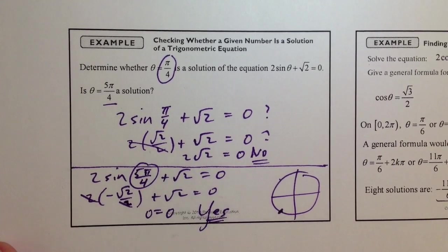Yes, meaning that 5 pi over 4 is, in fact, the solution to that given equation.